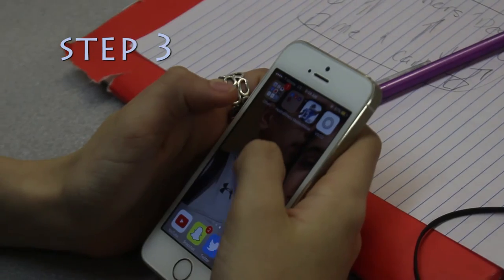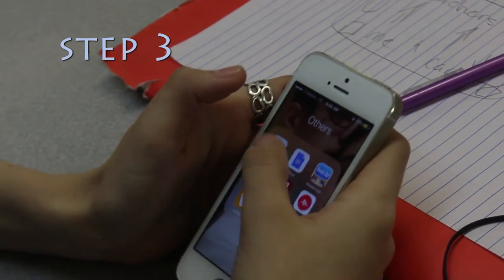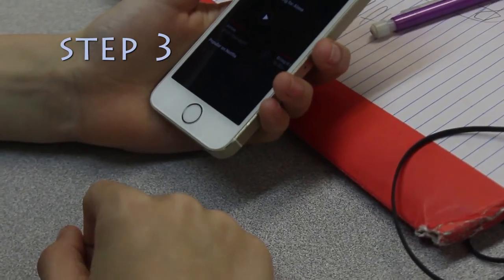Step 3: Plug your earbuds into your phone and open up Netflix. Make sure it's fully plugged in so no sounds end up coming out of your phone.